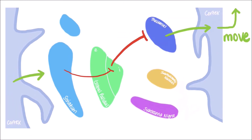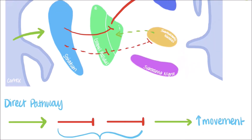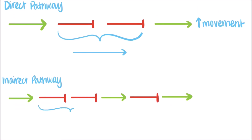In the indirect pathway, the excitatory signals from the cortex cause the striatum to inhibit the external globus pallidus. The GPE has inhibitory projections to the subthalamic nucleus, which then promotes the GPI's inhibition of the thalamus. When drawn out, you can see that the inhibition of the GPE actually works to promote the excitation of the GPI by the subthalamic nucleus. This then promotes the GPI's inhibition on the thalamus. Together, this pathway suppresses movement.